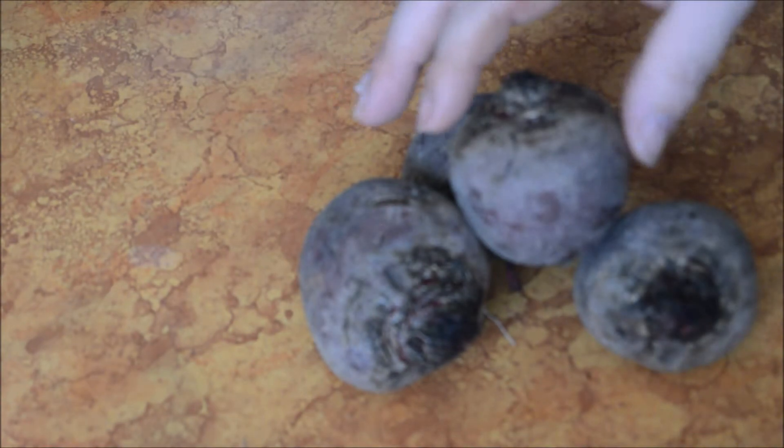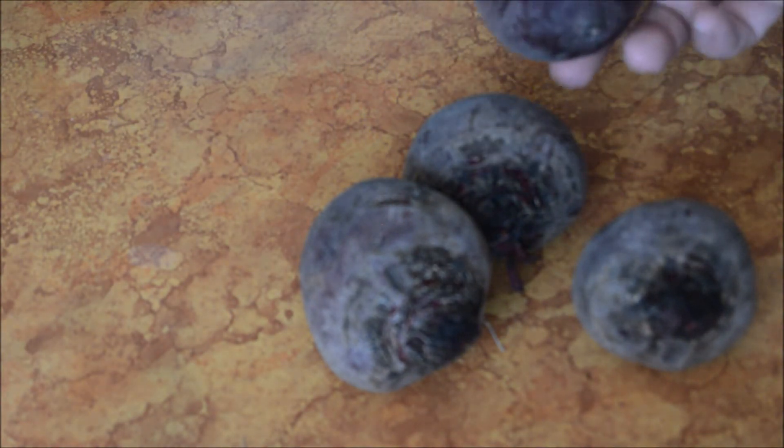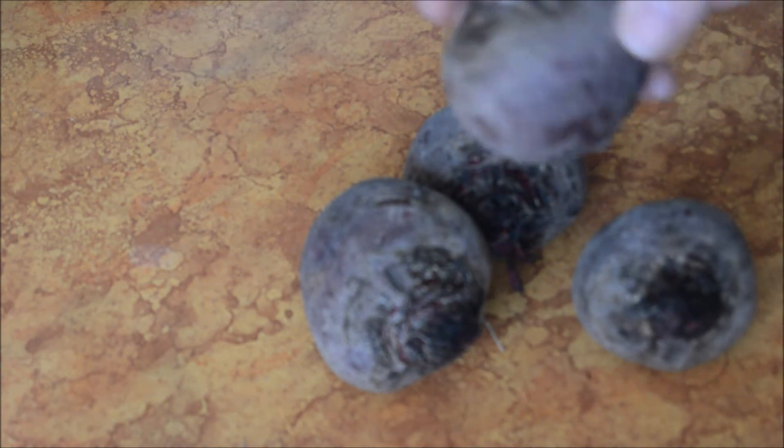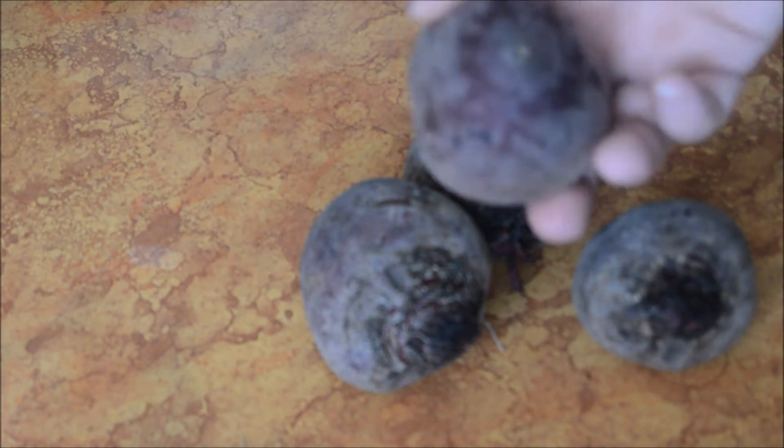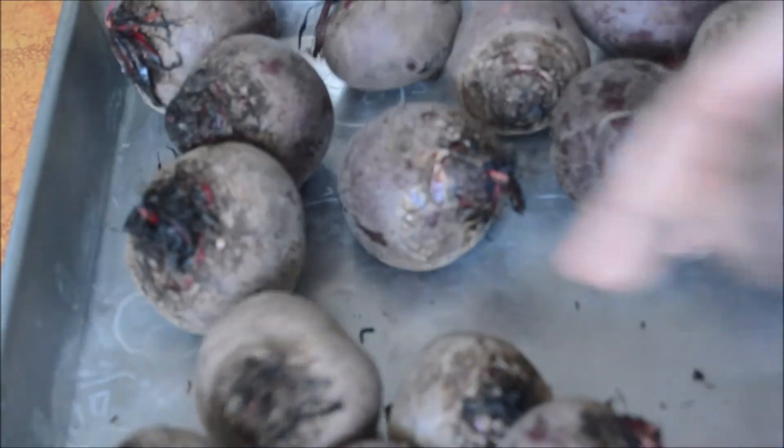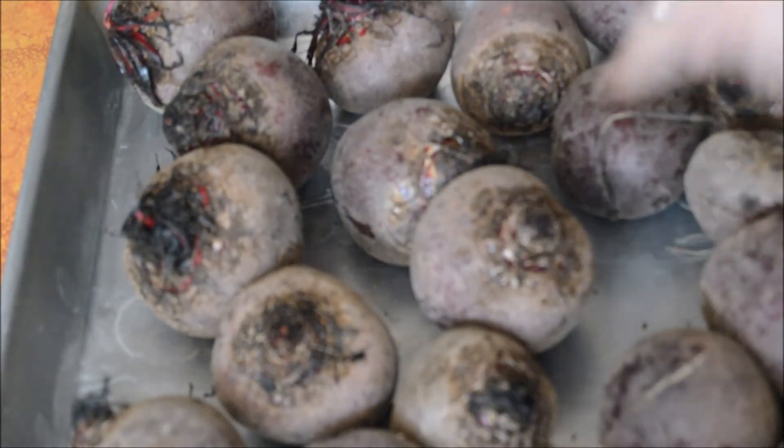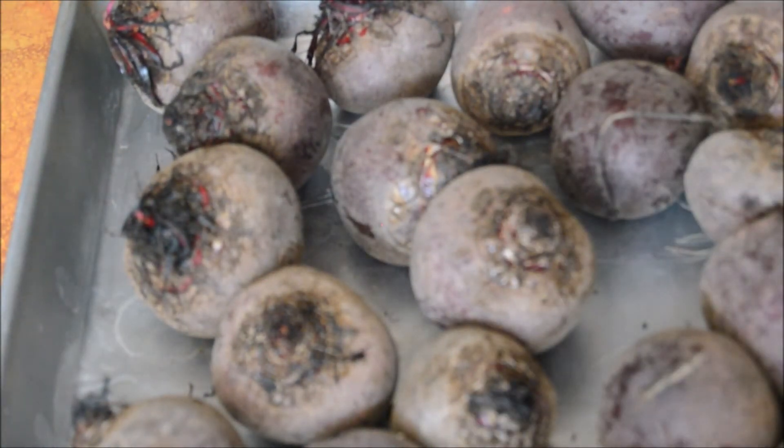Okay, so what you first want to do is, you got all these beets. I probably got 12 pounds here. You just take your beet and you find a pan. We have this big cake pan here, so you just kind of put them in here, and you just take a little water, not a lot.